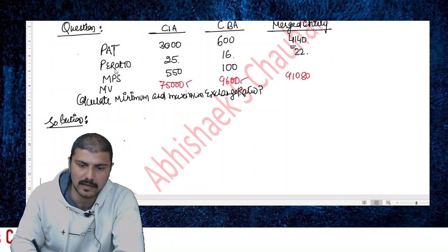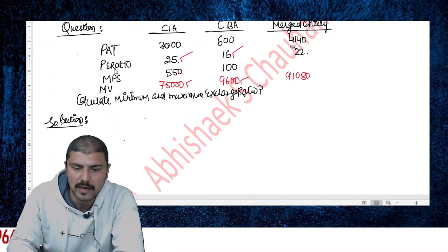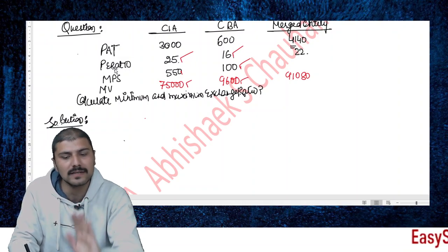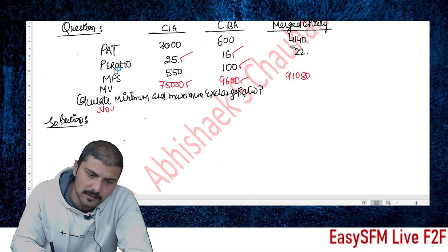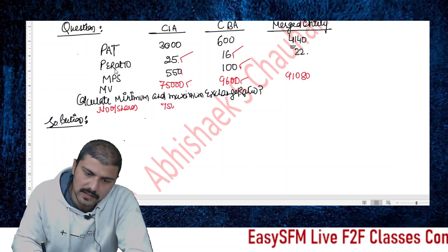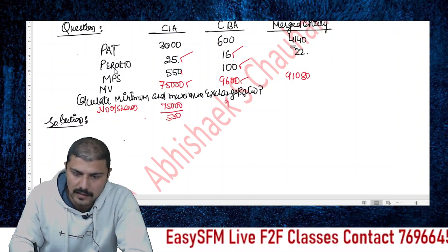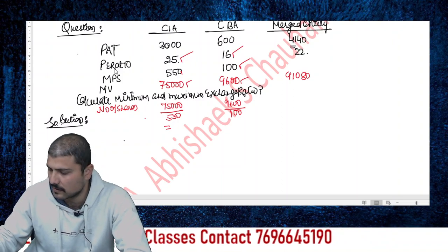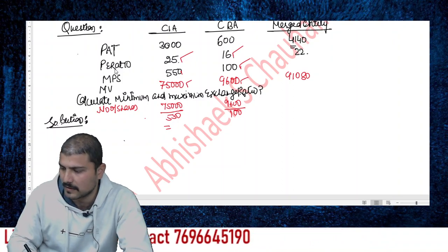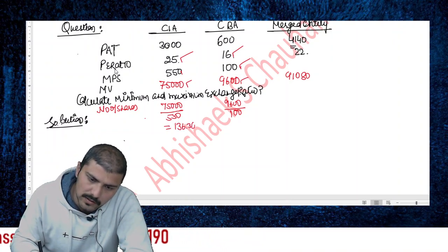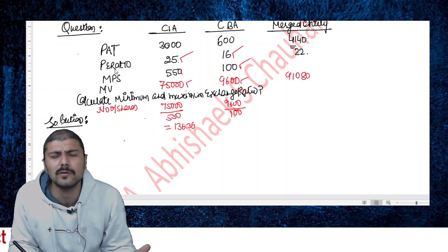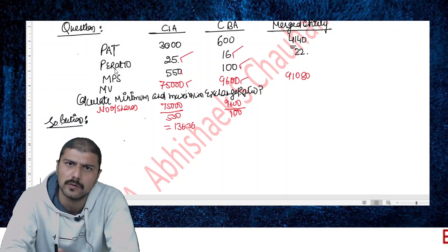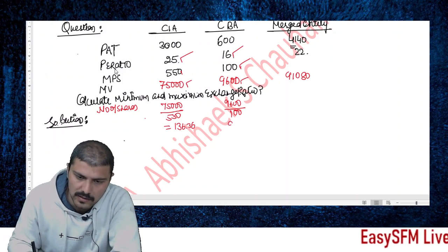Now if we have total market values and market price per share, we can calculate the number of shares. Number of shares for CIA = 75,000 ÷ 550 = 136.36. Number of shares for CBA = 9,600 ÷ 600 = 96. Note that fractional shares are not possible practically, but in financial calculations they can be used.